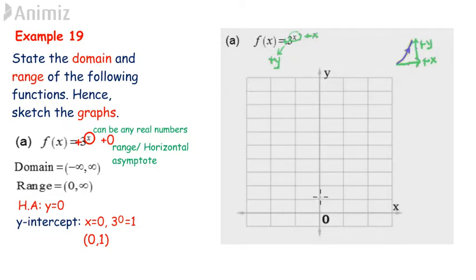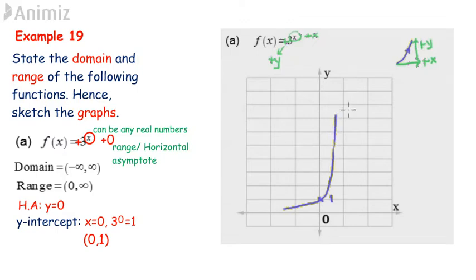Plot the y-intercept: when x is 0, y is 1. The horizontal asymptote for this graph is y equals 0, and the graph sits above the x-axis. Label the graph as function f(x) equals 3 to the power of x.